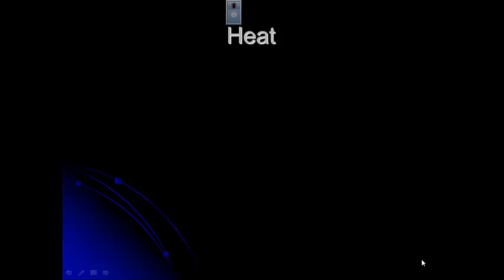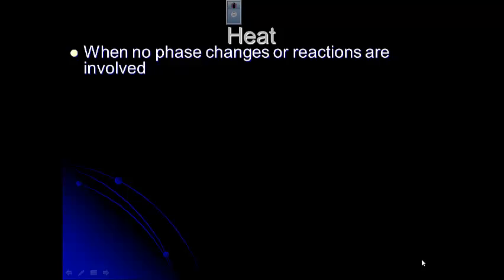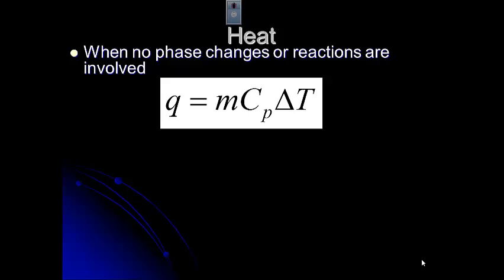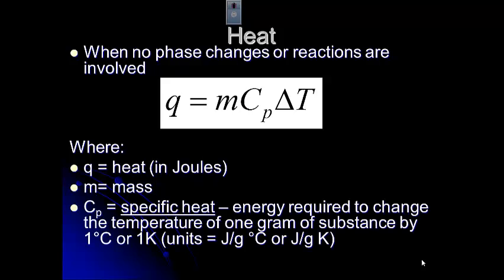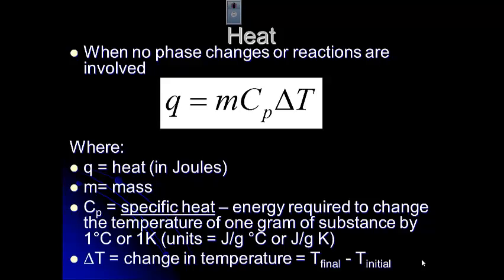Let's look at heat. When there are no phase changes or reactions involved — and I would highlight that in your notes — then Q equals MCpΔT. Q is our heat in joules. M is mass. Cp is specific heat: the energy required to change the temperature of one gram of a substance by one degree C or one K, with units of joules per gram degree C or joules per gram K. Delta T is the change in temperature, always T final minus T initial — and that will affect your sign.